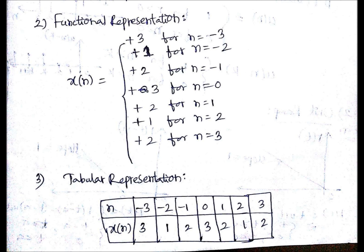Then the third representation is tabular representation. Here you need to represent one row as the time step n and the second row is the actual function, that is x(n) - the value of x at that particular n. This is a tabular representation.